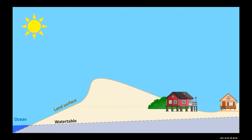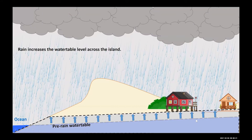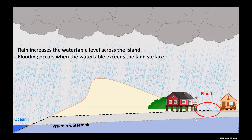Looking at a schematic of the Outer Banks, you have the land surface, the ocean, and a dashed line showing the profile of the water table. When you have rain, that water infiltrates into the aquifer and elevates the water table all the way across the island. You get flooding from this increase in groundwater any time the water table pops up above the land surface.